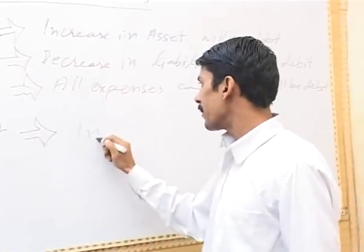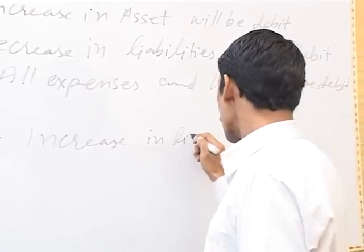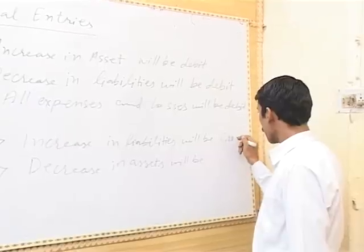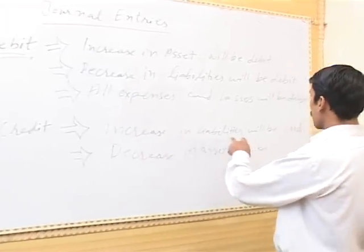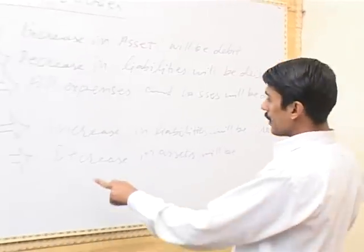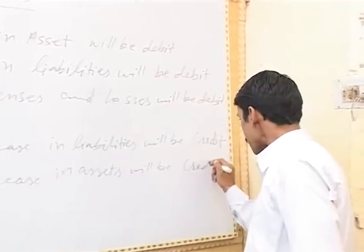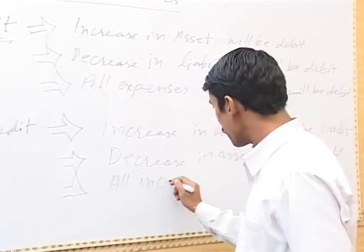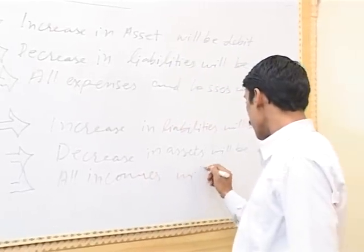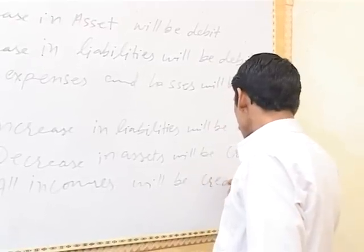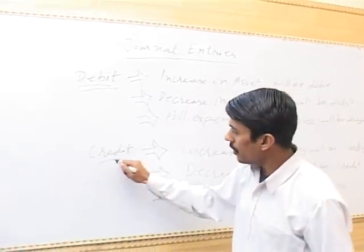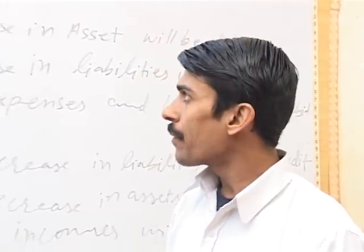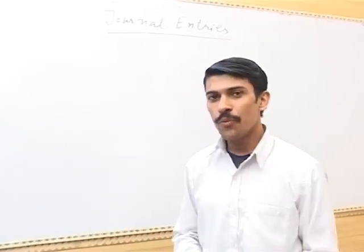Now, what will be credit? Increase in liabilities will be credit. Decrease in assets will be credit. All incomes will be credit. So this is the credit rule. Now we give some examples.